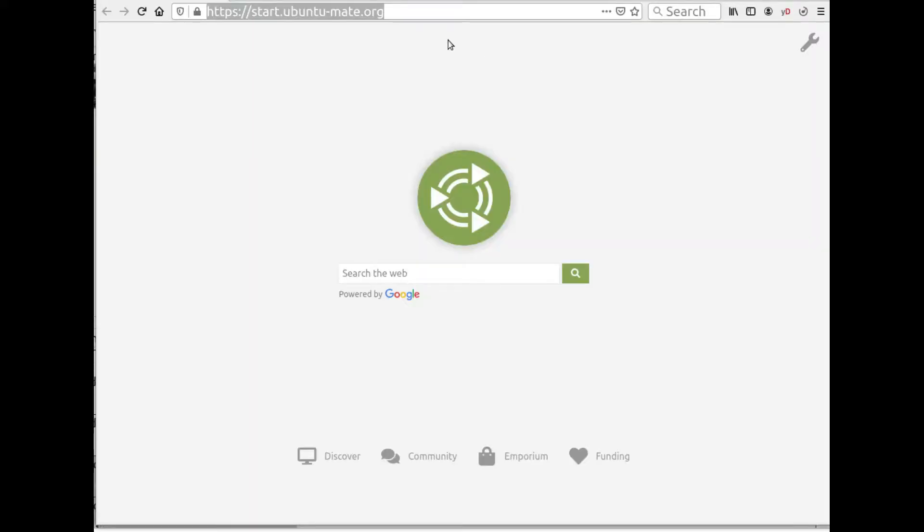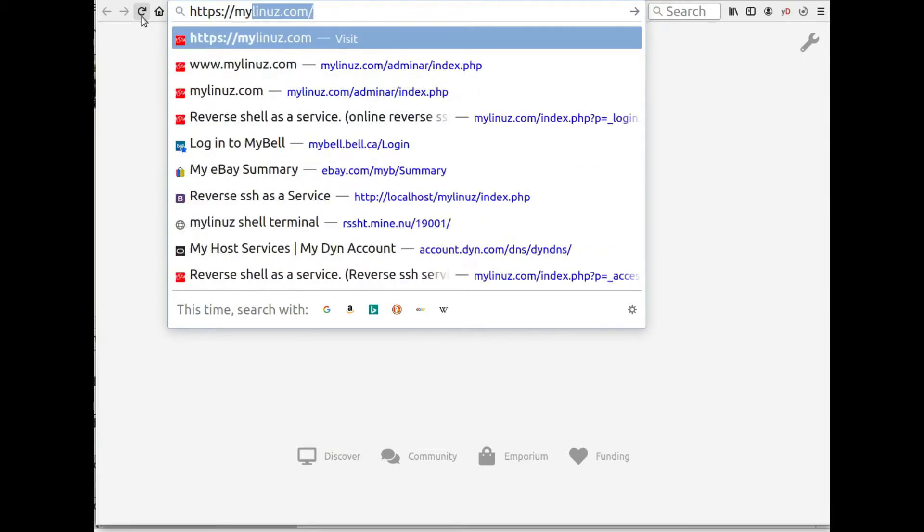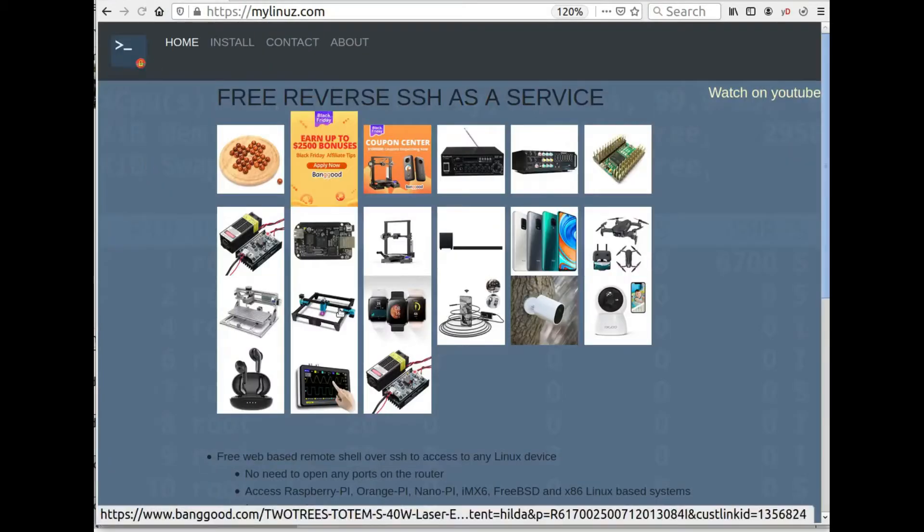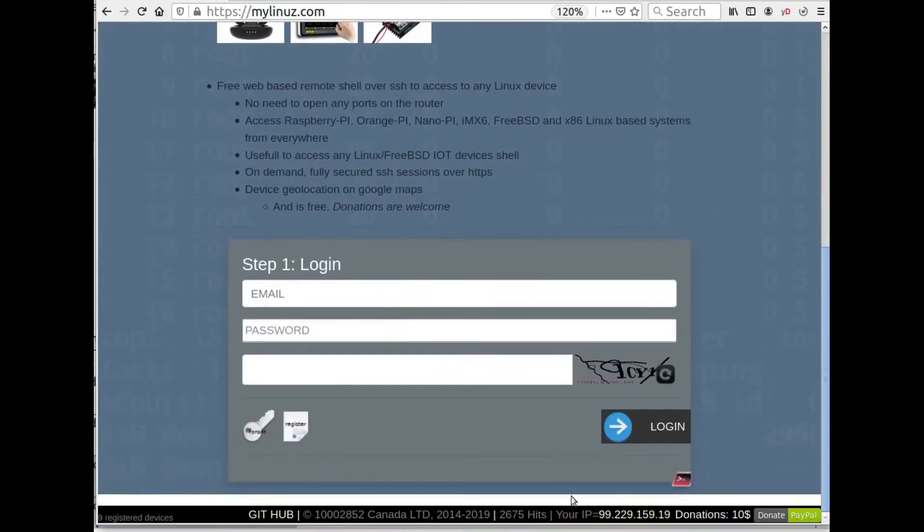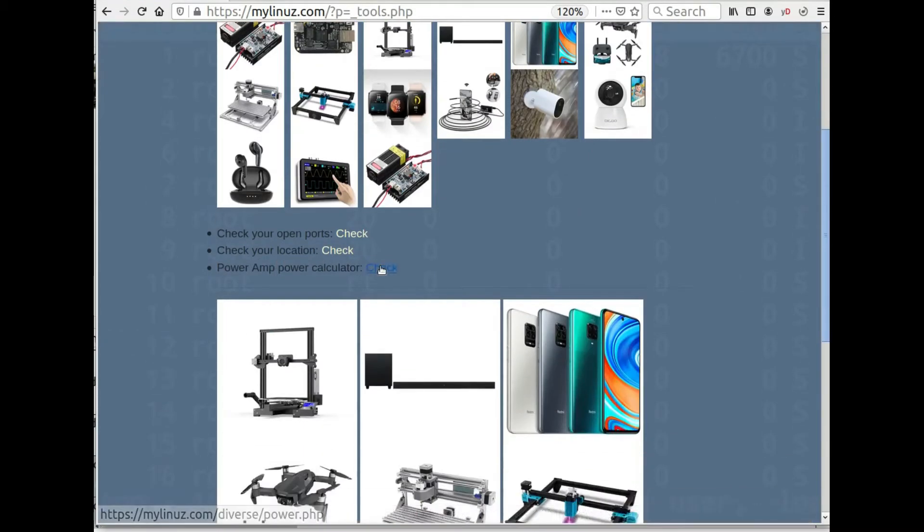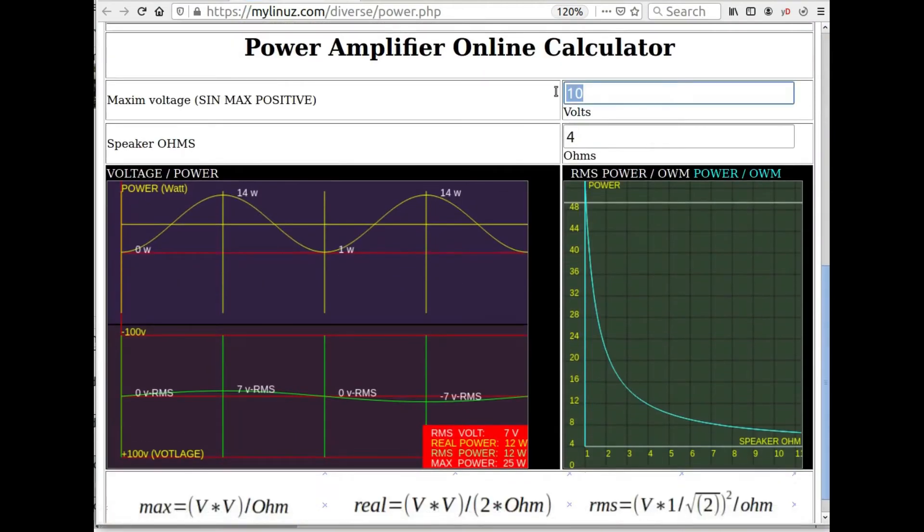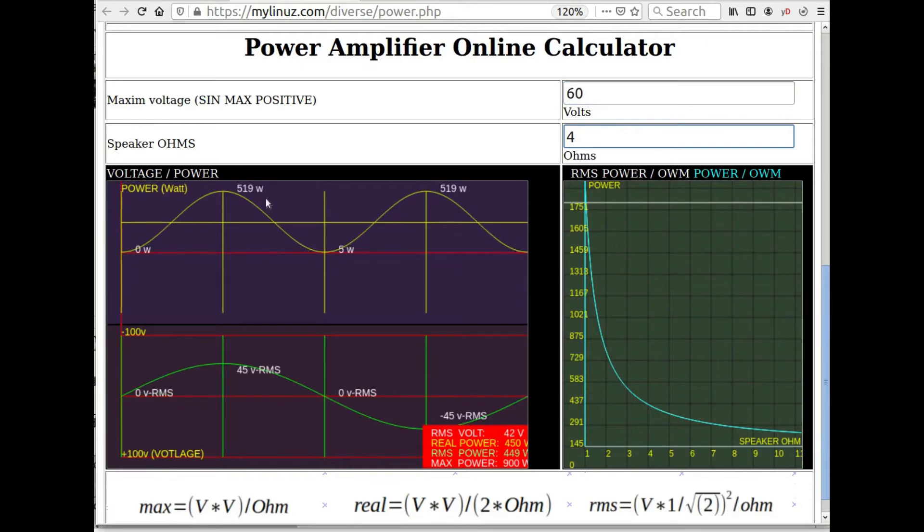Let's use the web form at Mylanews.com and see how much power it can deliver. 60V peak voltage, we get RMS power of 449W on 4 ohms.